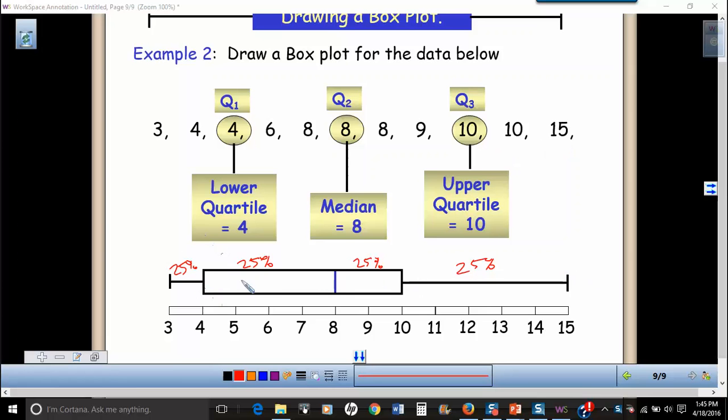So just knowing that can help you analyze certain features of the box plot and of the distribution. So this upper 25% are more spread out, or they vary more than the lower 25%.